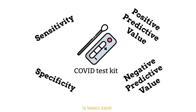If someone has the disease or the thing of interest, we want it to come out positive. If the person doesn't have the disease or thing of interest, then we expect it to come out negative. These four things help us assess that. I have a video covering sensitivity and specificity, so I will not cover these two concepts in detail in this video.